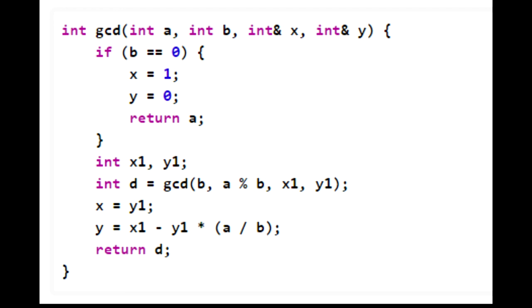So what we're going to get here is int d is going to equal GCD of - now A transitions to B, right? So now GCD of B, and now B transitions to A mod B. So we have B as A mod B recursively calling this function. Now we pass in X1 and Y1 by reference so that this gets changed during the recursive call when we return out.